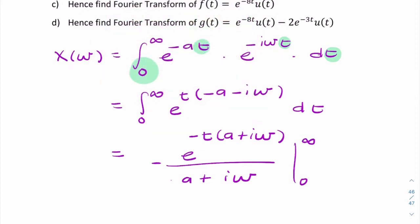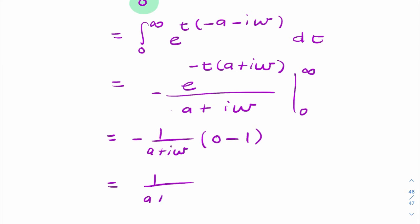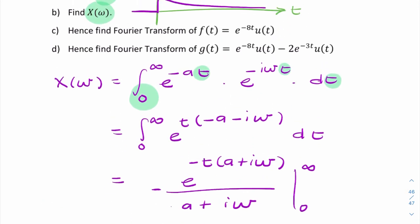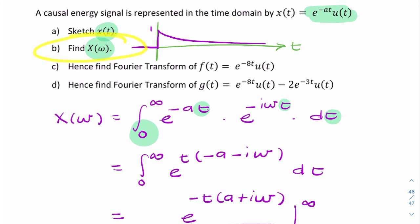Now, remember that e to the power minus infinity approaches zero, and e to the power zero equals one. We can now write the answer as minus one over a plus i omega into zero minus one. So that gives you one over a plus i omega. So that's your Fourier transform x of omega. So that is your solution to the second part.